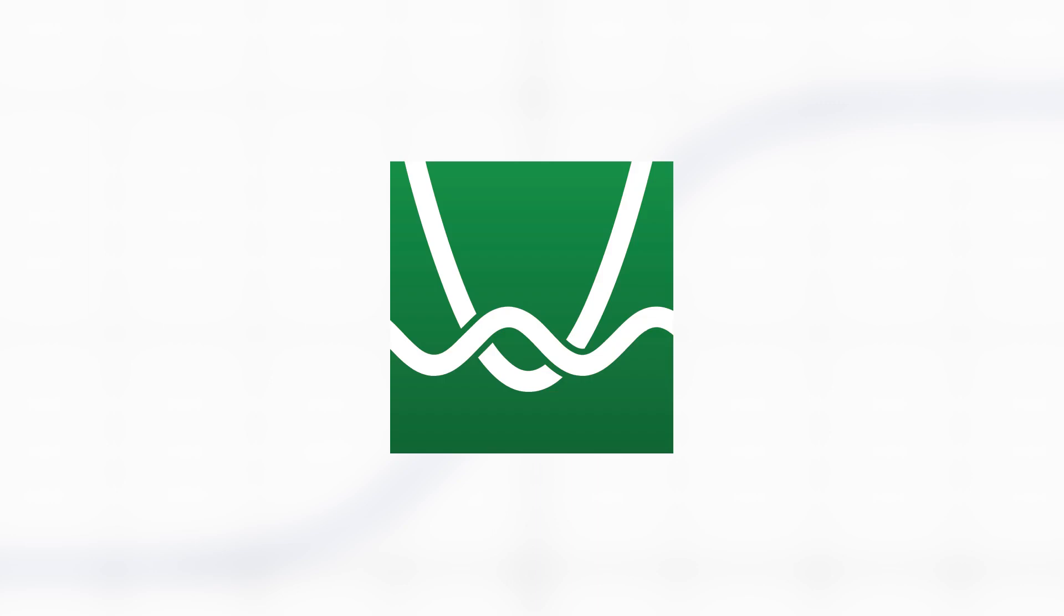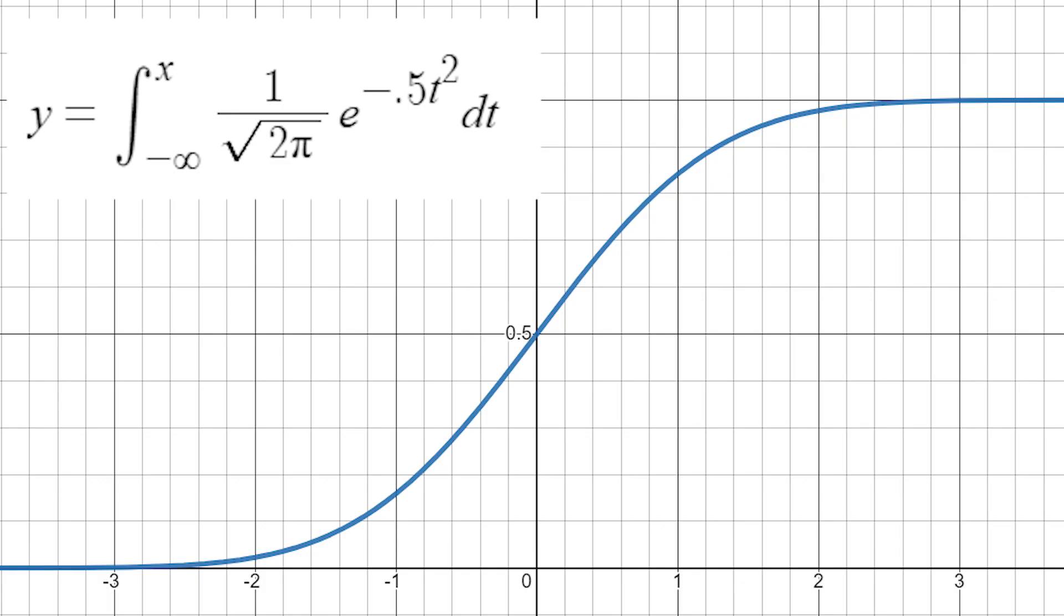Now, even though we don't know what our CDF will look like, Desmos does. By graphing y equals 1 over the square root of 2π times the integral from negative infinity to x of e to the negative 0.5 t squared dt, we get this lovely looking curve right here.